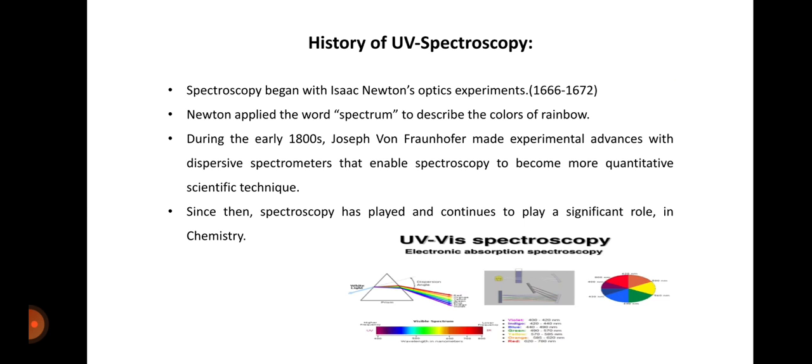During the early 1800s, Joseph von Fraunhofer made experimental advances with dispersive spectrometers that enabled spectroscopy to become more quantitative scientific technique. Since then, spectroscopy has played and continues to play a significant role in chemistry and many other fields.